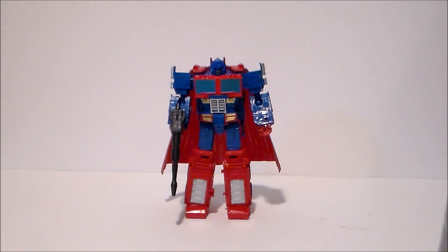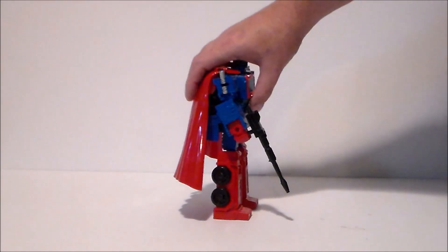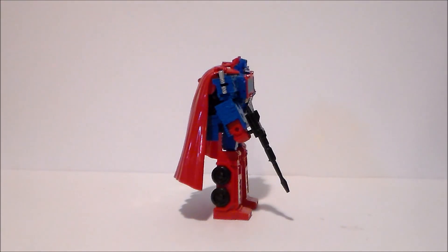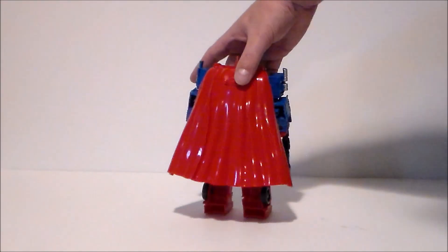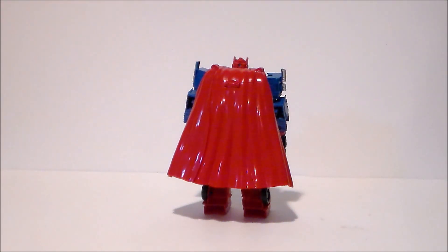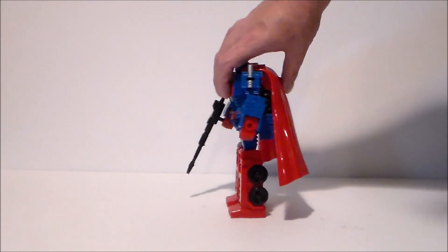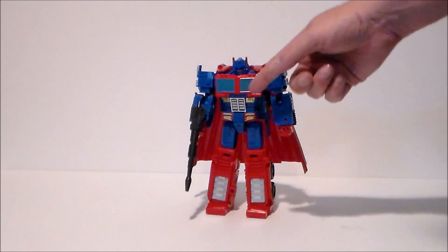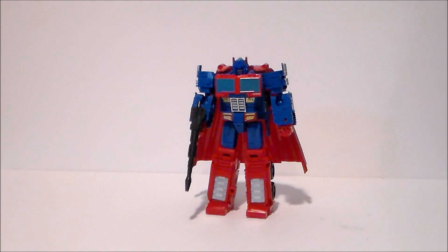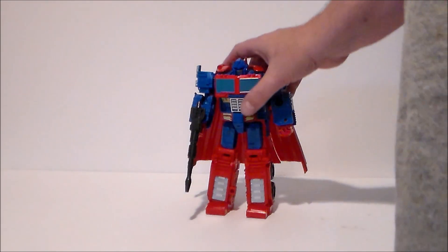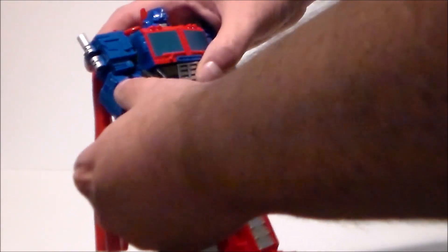Here we have Super Optimus Prime out of the packaging, and this guy is fantastically fun. Now this is an oversized KO Transformers Kingdom Core Class Optimus Prime, but I just love this. It's actually got a die-cast chest which is very, very cool. The color scheme is obviously very different, very Superman-esque.